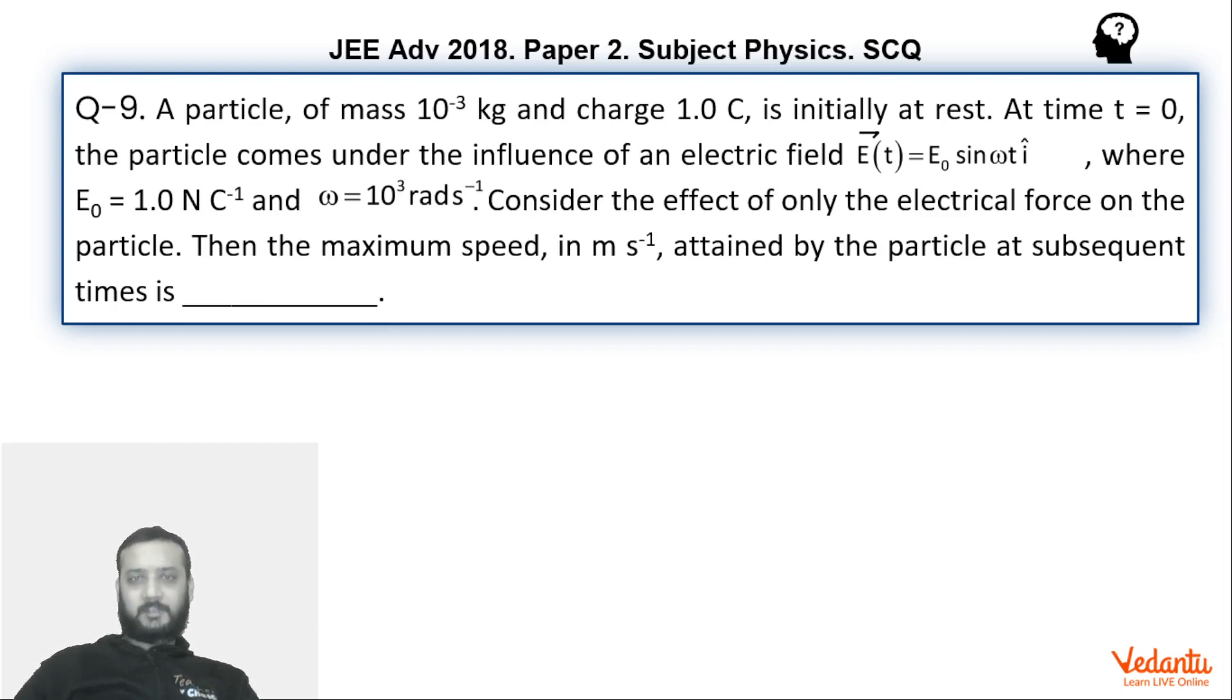So let's see first by using the simple concept or regular method. So what's happening over here, there is a particle of mass 10 to the power minus 3 kg and charge 1 Coulomb. It is initially at rest. At time t goes to 0, it comes under electric field whose variation with time is E0 sin omega t. That means this electric field varies sinusoidally in the positive i cap direction. E0 value has been given, omega has also been given. We have to consider only electrical forces and we have to find the maximum speed attained by this particle.